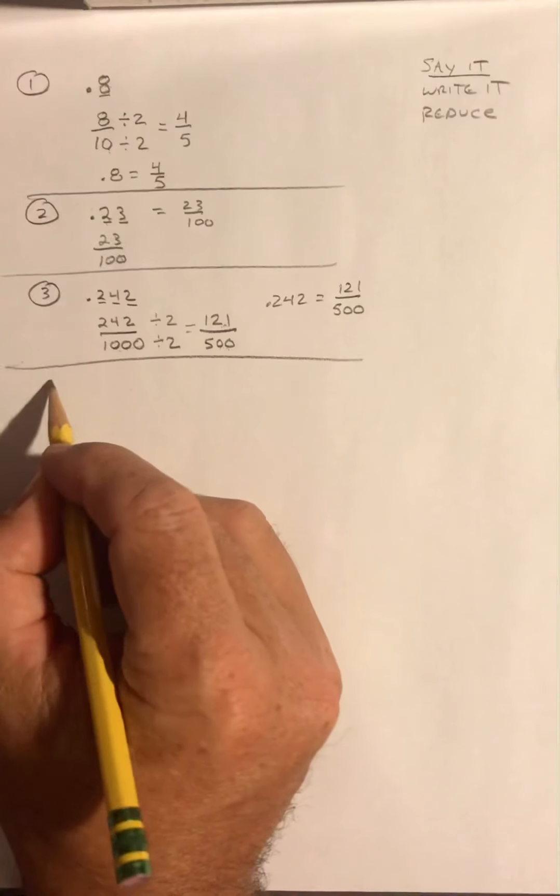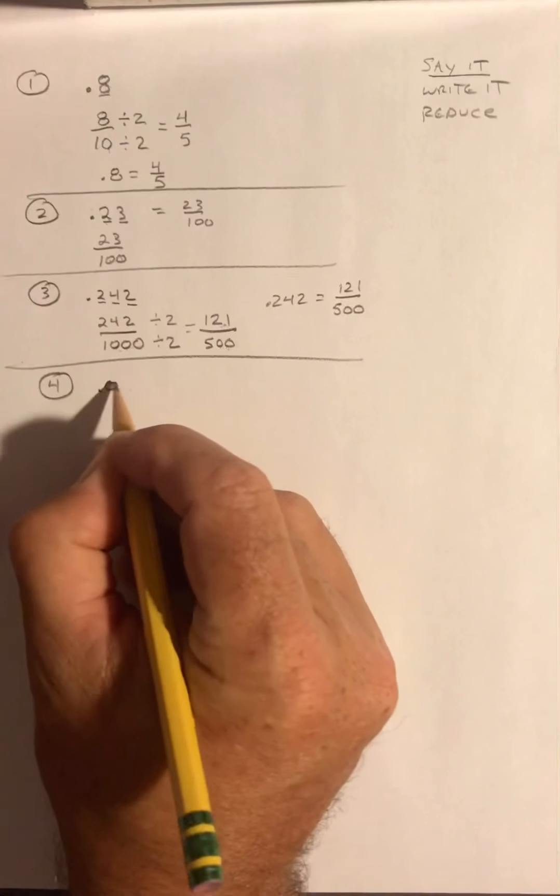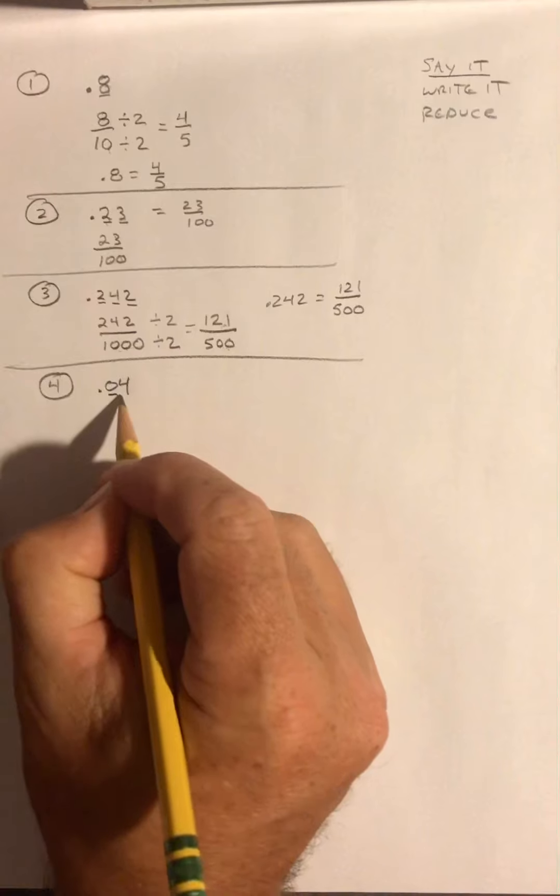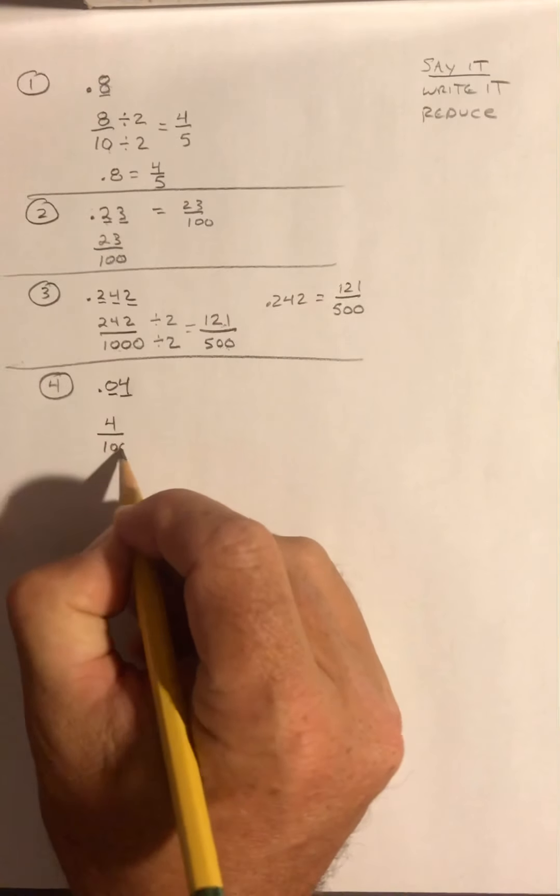Let's try one that comes up a lot and seems to be a little tricky. Let's try 0.04. This is two spaces out, so these are hundredths. So I'm going to write 4 hundredths.